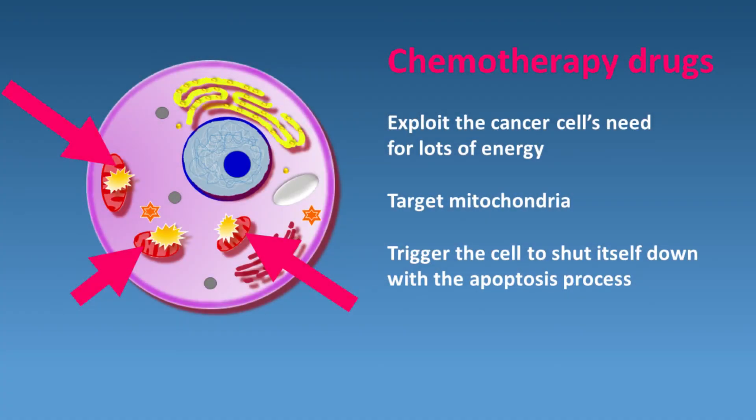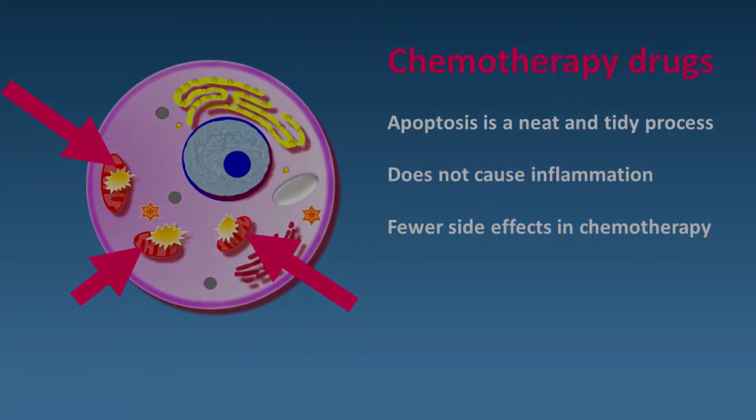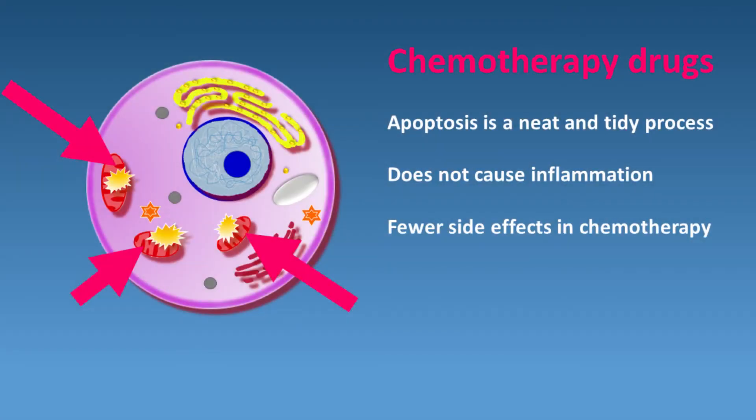Existing chemotherapeutic drugs exploit this need and target the mitochondria to trigger the cancer cell into shutting itself down in the apoptosis cell death process. Apoptosis is a neat and tidy way for the cells to die, which does not cause inflammation in surrounding healthy cells and makes for far fewer side effects in chemotherapy.